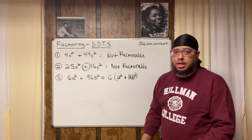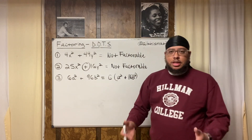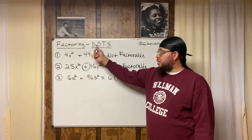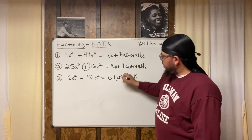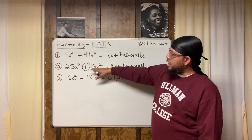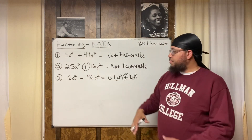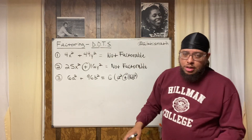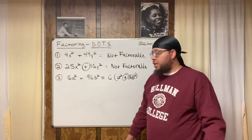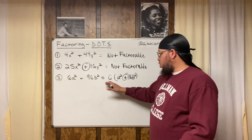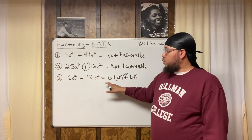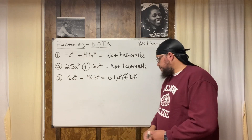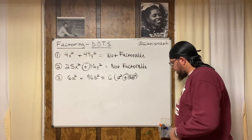Sometimes people get caught up in the momentum — they pull out the GCF and then see a perfect square and another perfect square and want to keep factoring using difference of two squares. But look — it's got a plus sign in between, so just like the first examples, we can't keep factoring. All we can do in number three is pull that six out. The final answer is 6 times the quantity (a-squared plus 16b-squared).